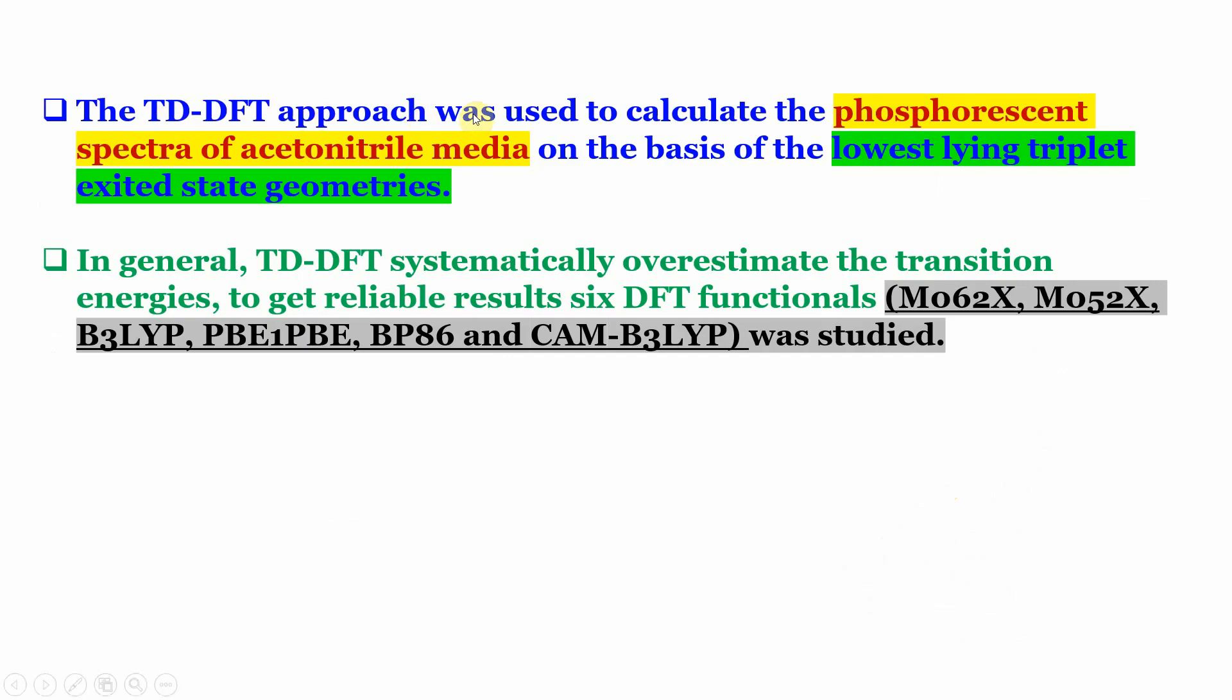The TDDFT approach was used to calculate the phosphorescent spectra of acetonitrile media on the basis of the lowest-lying triplet excited state geometries.